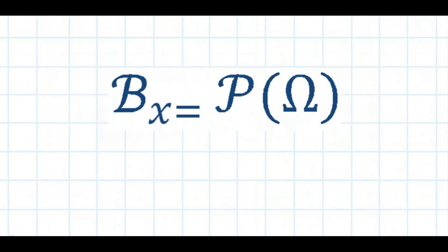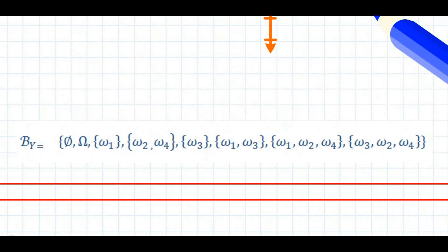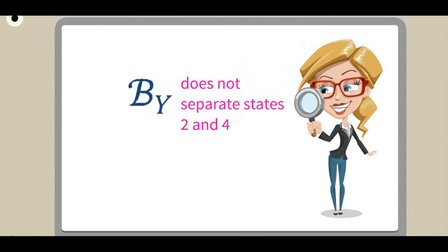Hence, we can say that script B_x equals P(omega), and script B_y equals null set omega, omega 1 omega 3, omega 2 omega 4. Script B_y does not separate states 2 and 4.